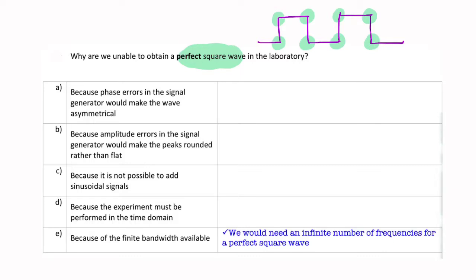You would never see this in real life. You would always have these overshoots and these little ripples here. So why is that? What's making it impossible to obtain a perfect square wave?